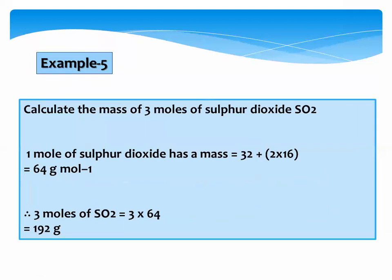Example number 5: Calculate the mass of 3 moles of sulfur dioxide SO2. 1 mole of sulfur dioxide has mass: sulfur 32 plus 2 oxygen (16 × 2 = 32), giving 64 g/mol. For 3 moles: 64 × 3 = 192 grams.